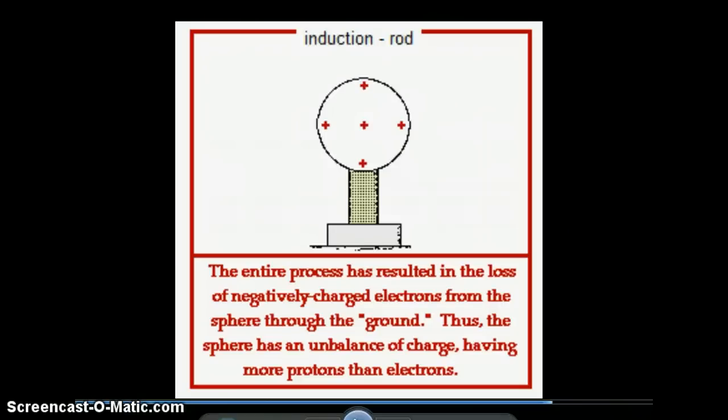We started with a negative rod, and we ended up with a positive sphere. That's the way it always happens in induction. We don't actually touch anything, we don't actually transfer anything from the charged object, but we use the ground to bring in electrons or send them out, and that allows us to create the opposite charge. So if you charge by conduction, you always get the same type of charge as you started with. If you charge by induction, you'll always get the opposite type of charge that you started with.